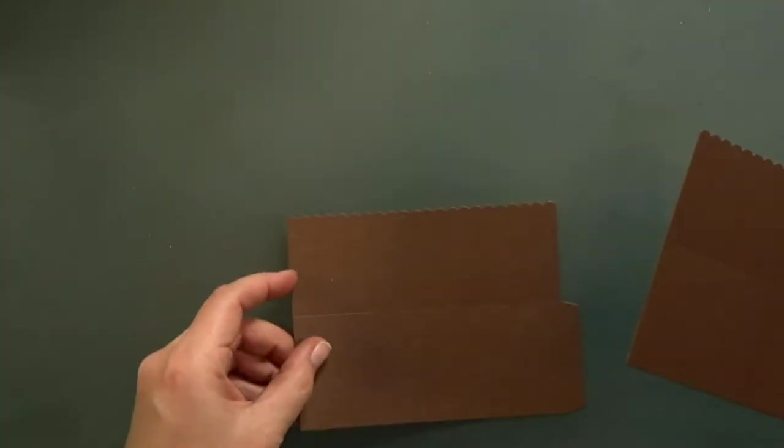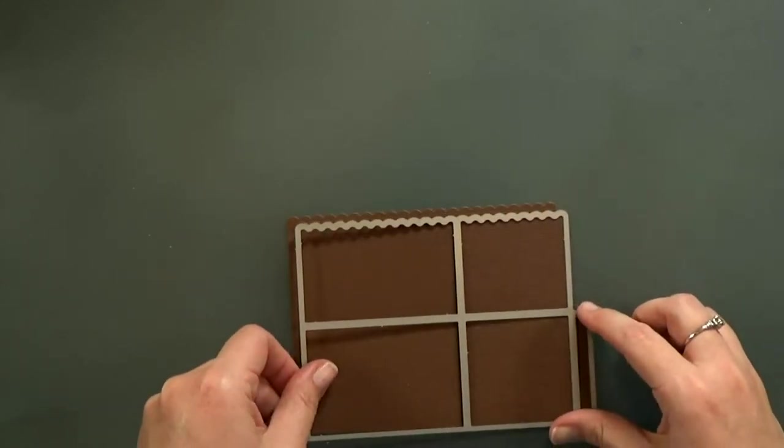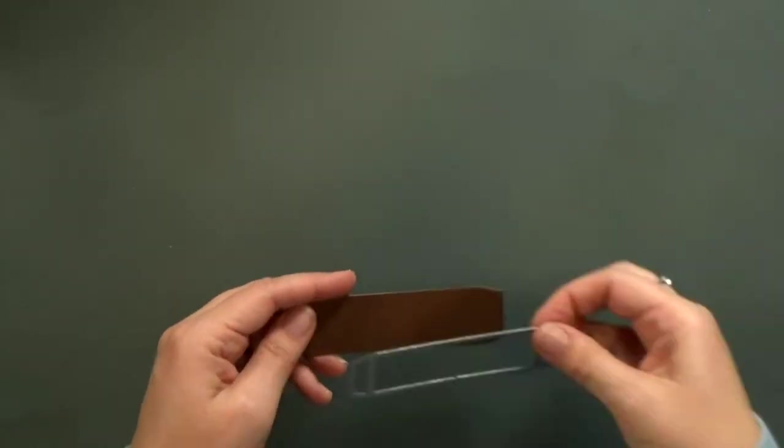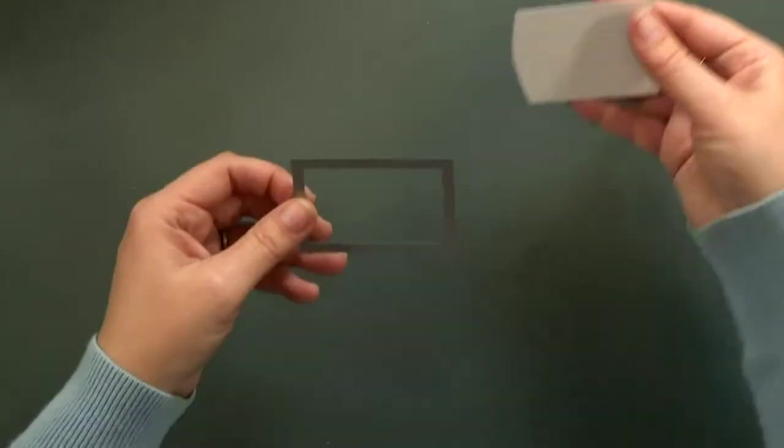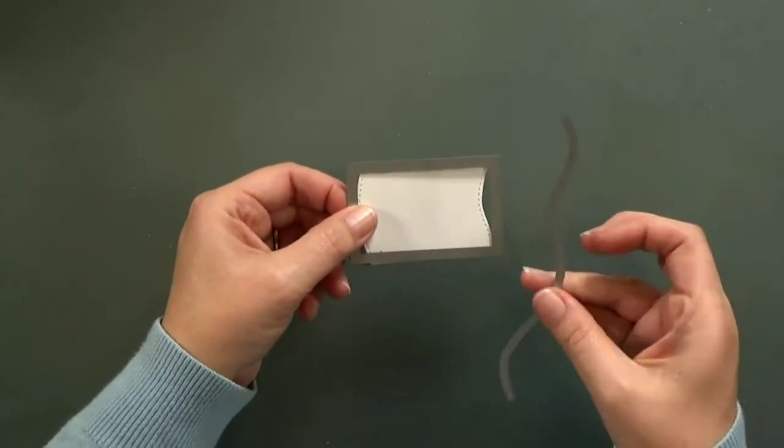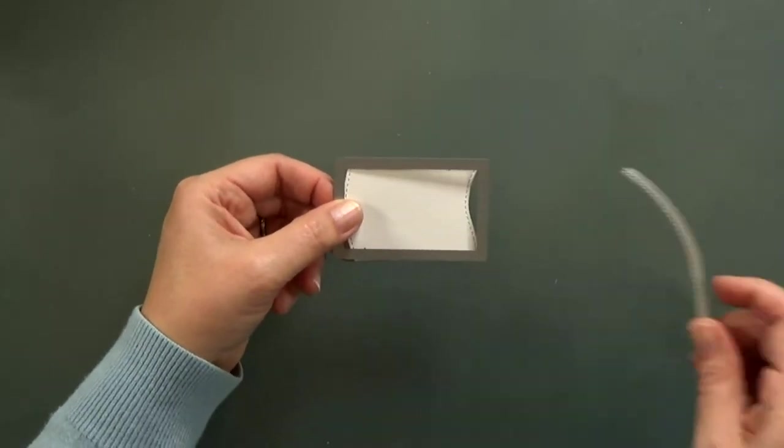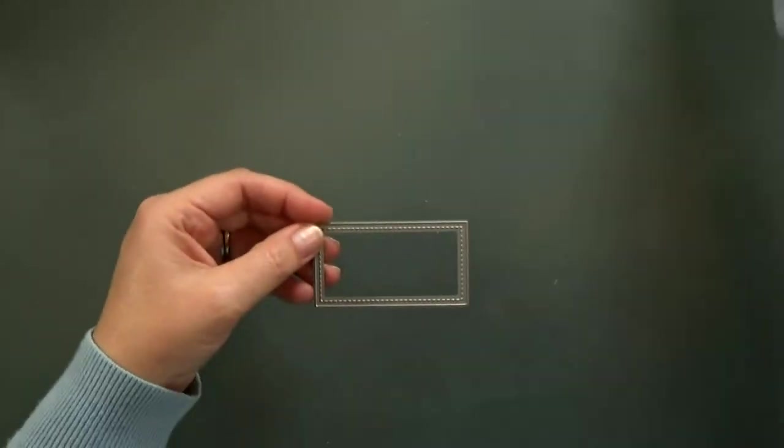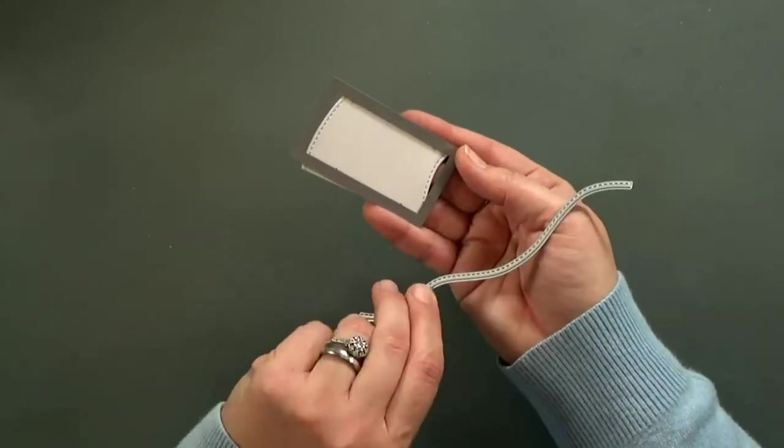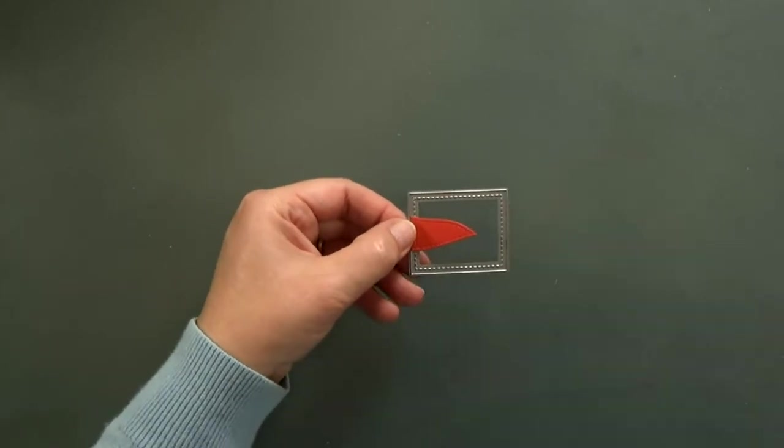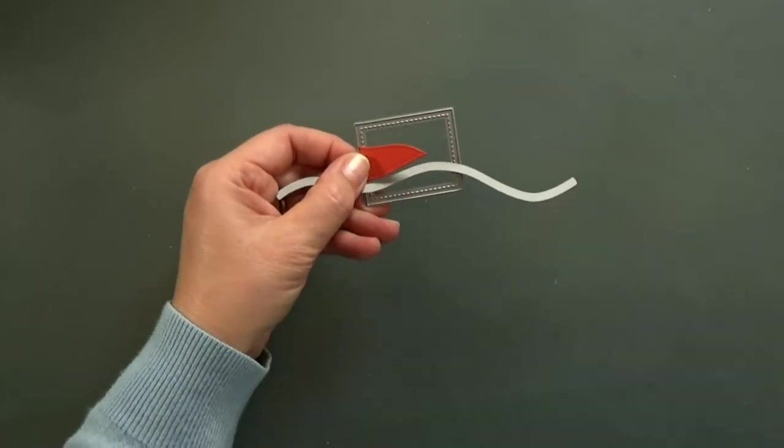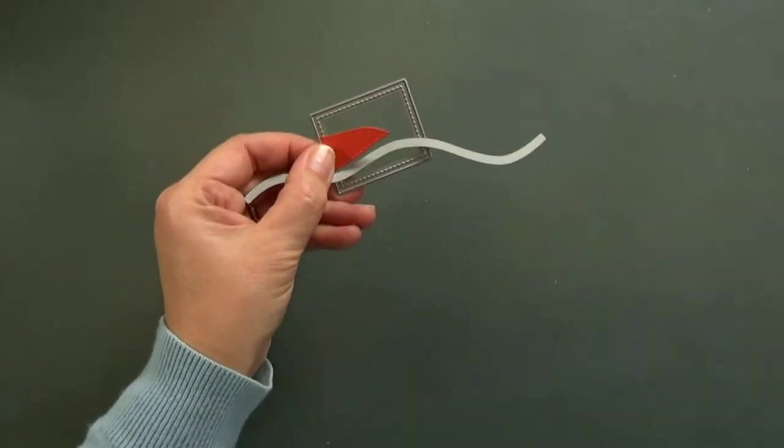Then I'm going to cut out two scallop box frames. I'll cut three center struts. For my sails, I'm going to cut out two different sized stitched rectangles, and then I'm going to use the stitched hillside dies again to cut the sides.